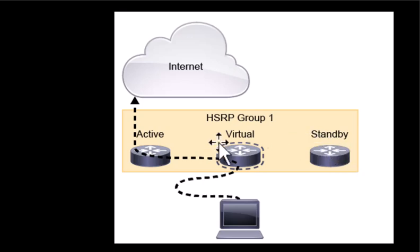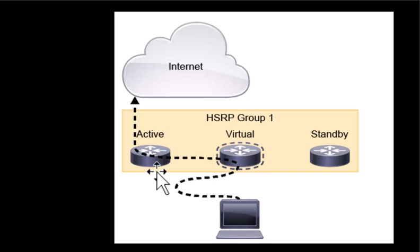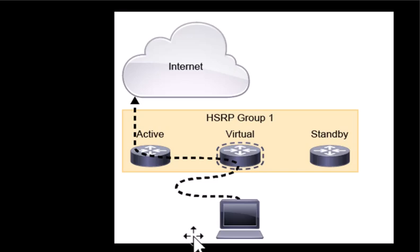The function of the standby router is to monitor the operation of the HSRP group and to quickly assume packet forwarding responsibility if the active router becomes inoperable. HSRP routers exchange hello messages to keep track of each other's states, so in case of a failure, the other one will pick up the active role. Clients will see minimal interruption of network traffic during the transition.